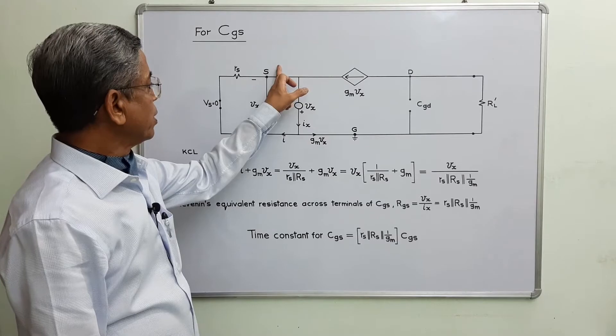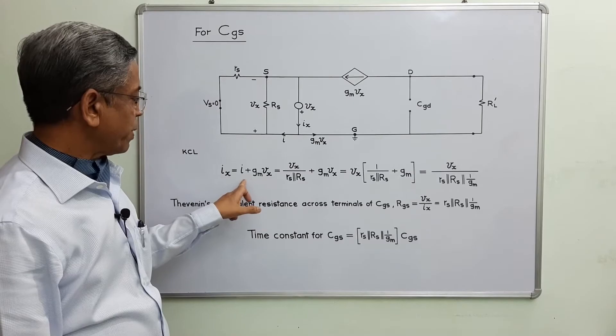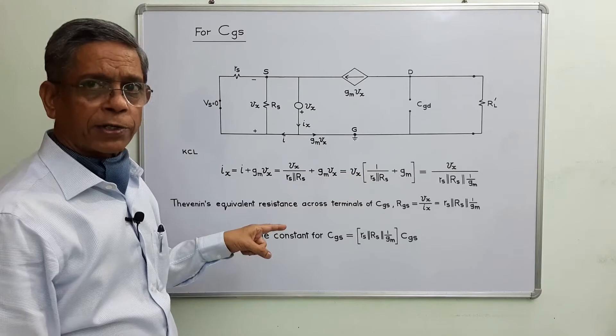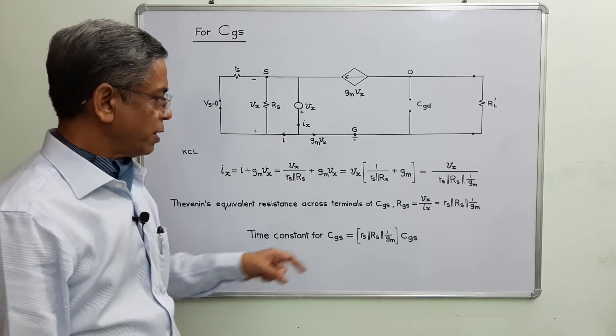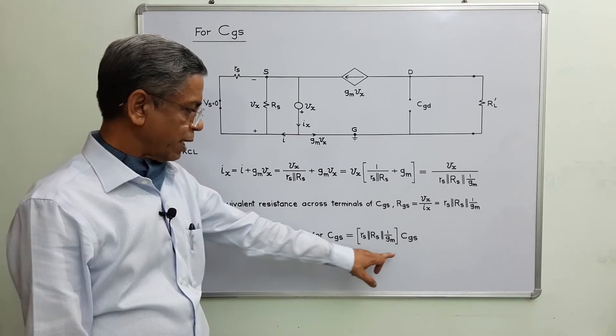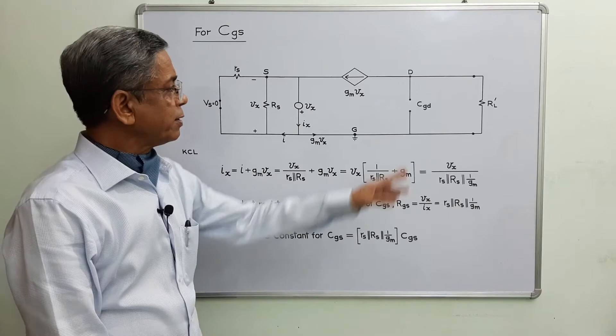The test voltage VX appears between gate and source, i.e., across RS. Applying Kirchhoff's current law at this node: IX = I + GM·VX, where I = VX divided by the parallel combination of the two resistors. From this expression we get the final relation between VX and IX. The Thevenin equivalent resistance RGS = VX / IX, which equals the parallel combination of RS, Ri, and (1/GM). The time constant for CGS is T1 = RGS · CGS.